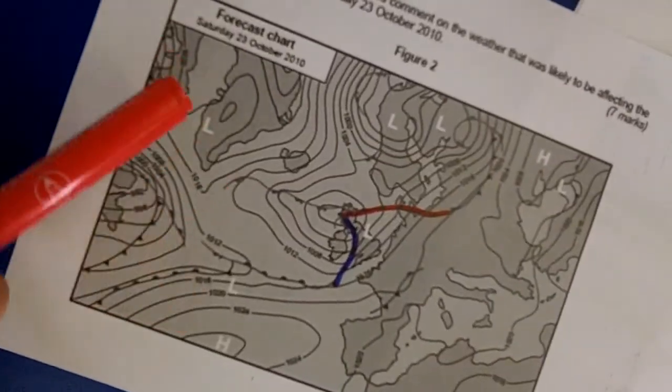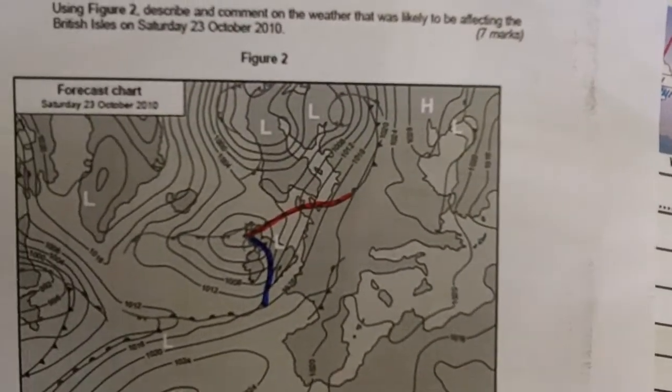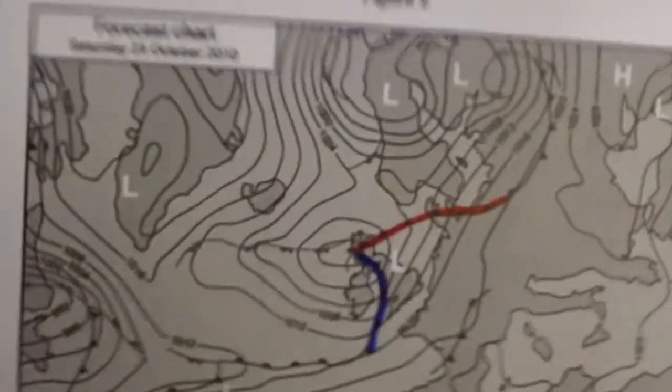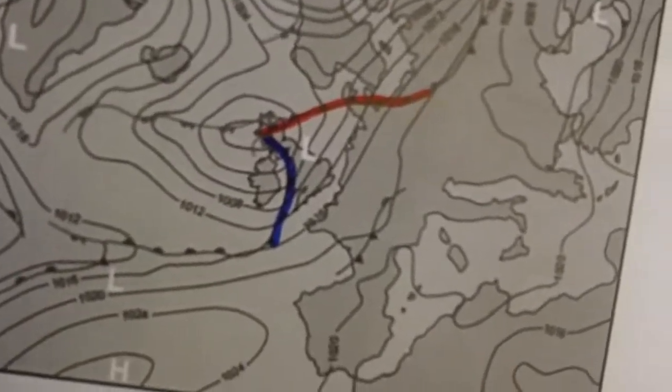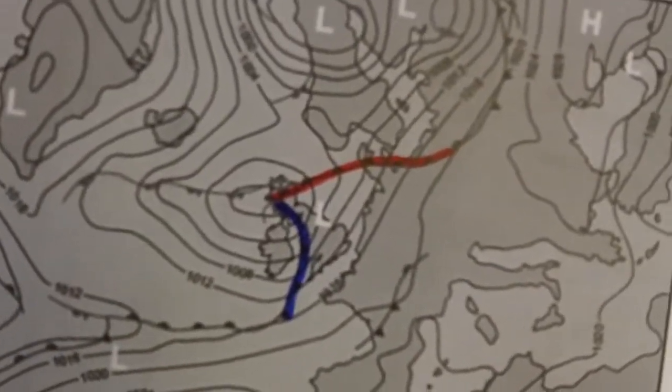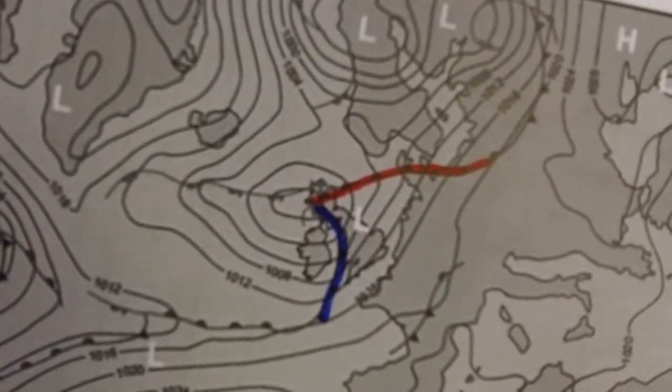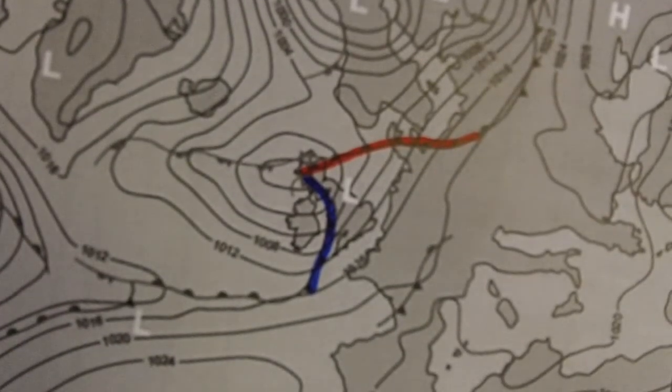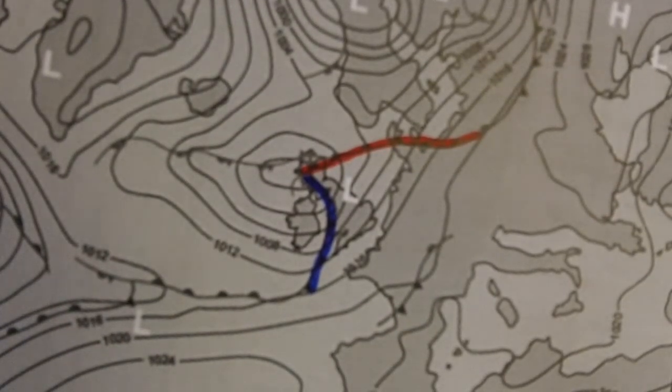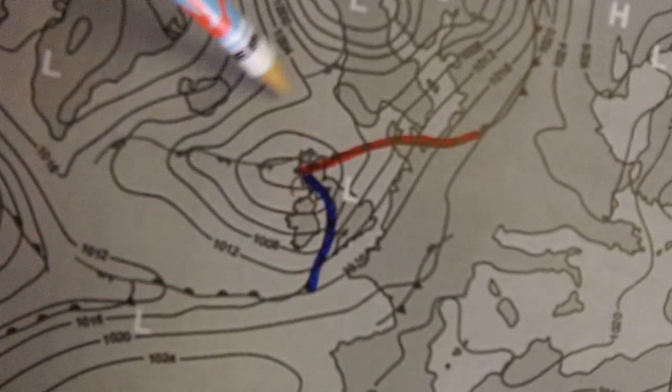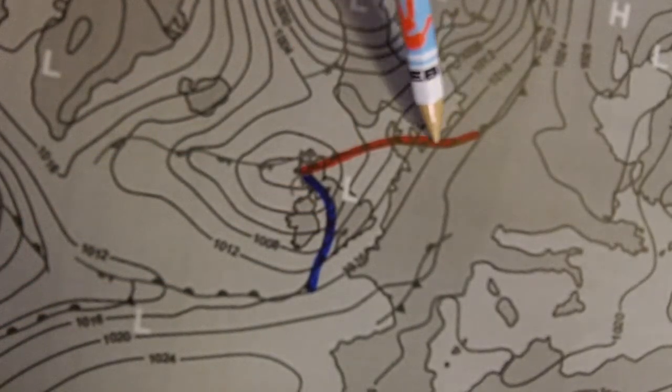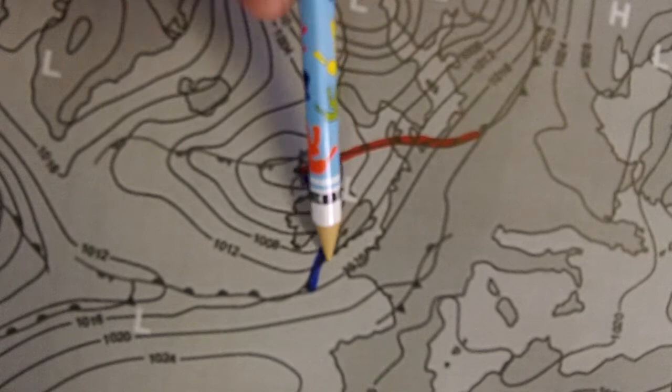If you then look at, this is a kind of classic exam question with a depression on it. Now, weather charts are something you should be able to look at and interpret. The examiners, I think, should always give you a fairly straightforward depression. So here you've got the UK, as you can see. It's being hit by the depressions, you've got that classic shark's fin, there's your warm front, there's your cold front.